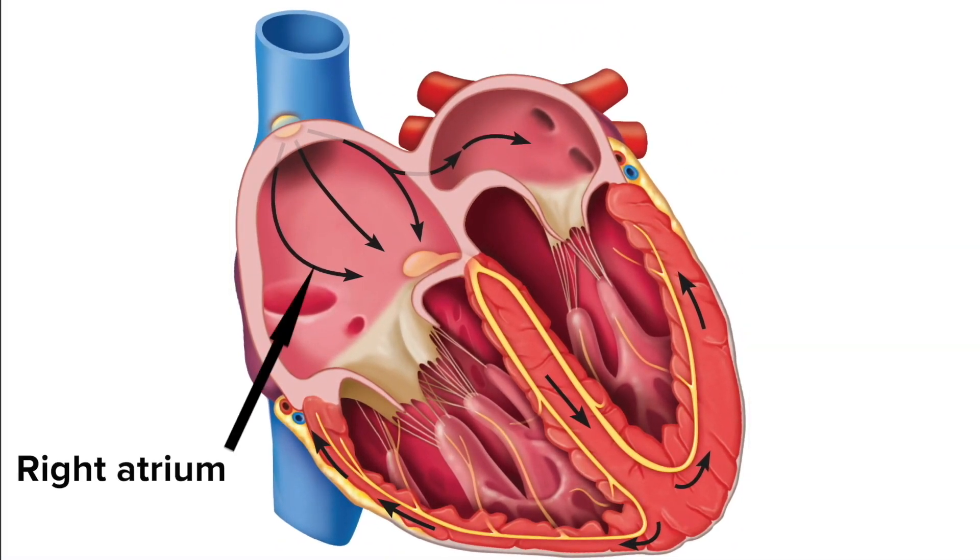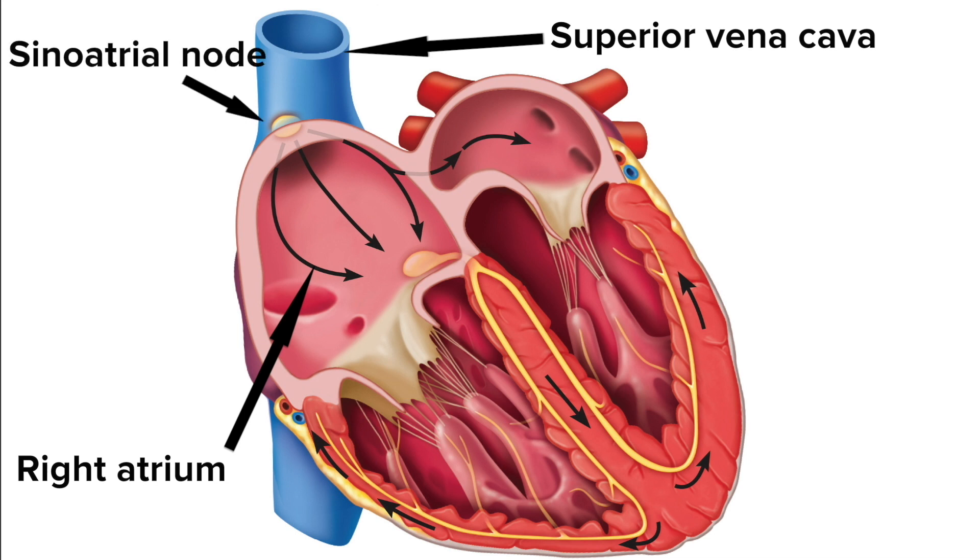In the right atrium, pretty close to the superior vena cava, is a group of modified cardiac muscle cells called the sinoatrial node.